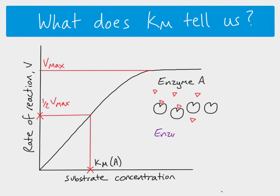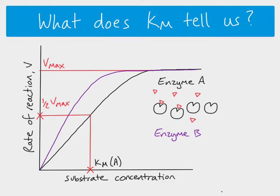Comparing that to another enzyme — enzyme B — enzyme B follows a similar shape in that we have a steep initial rate of reaction which then slows down. You can see that Vmax is the same for enzyme B, so it has the same maximum rate of reaction. That won't be the same for all enzymes, but in this example they've both got the same Vmax, which means they've got the same half Vmax. But if you have a look at this graph, if we come from half Vmax and move across to where it intersects with the enzyme B plot, and then move down to find Km, we can see that although Vmax is the same, Km is different.